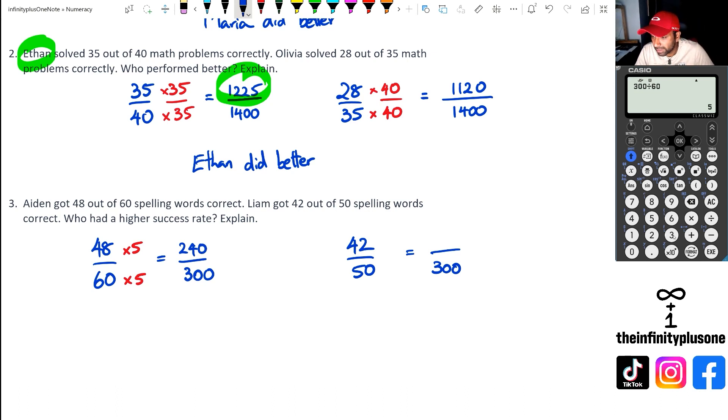And likewise, we've got 300 divided by 50, that's going to give me six. So I'm going to multiply this by six, and the numerator by six. So when I do 42 times six, I end up with 252. And the number that's actually bigger between 252 and 240, we know that's 252. So that's actually Liam. So we're going to write a little statement that says Liam has had a higher success rate.